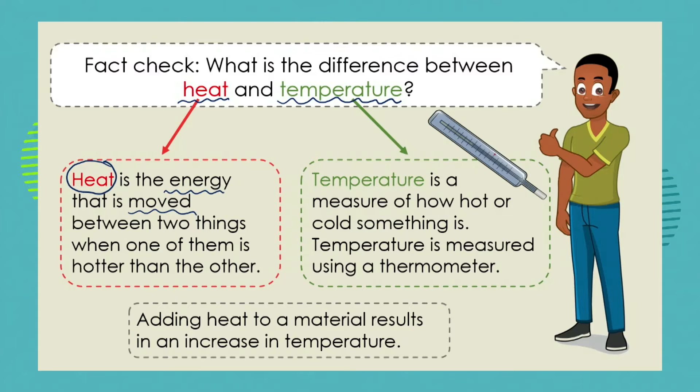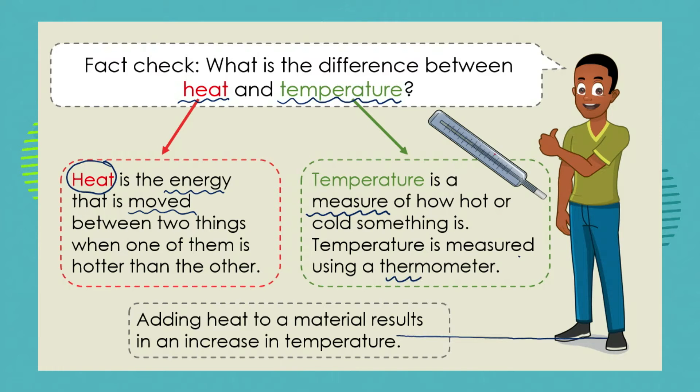So what then is temperature? Temperature is a measure of how hot or cold something is. Temperature is a measure of how much heat energy has been transferred to an object. We can measure the temperature using a thermometer. Usually adding heat to a material is going to cause an increase in the temperature. So temperature is something that is a measure, whereas heat is a form of energy.